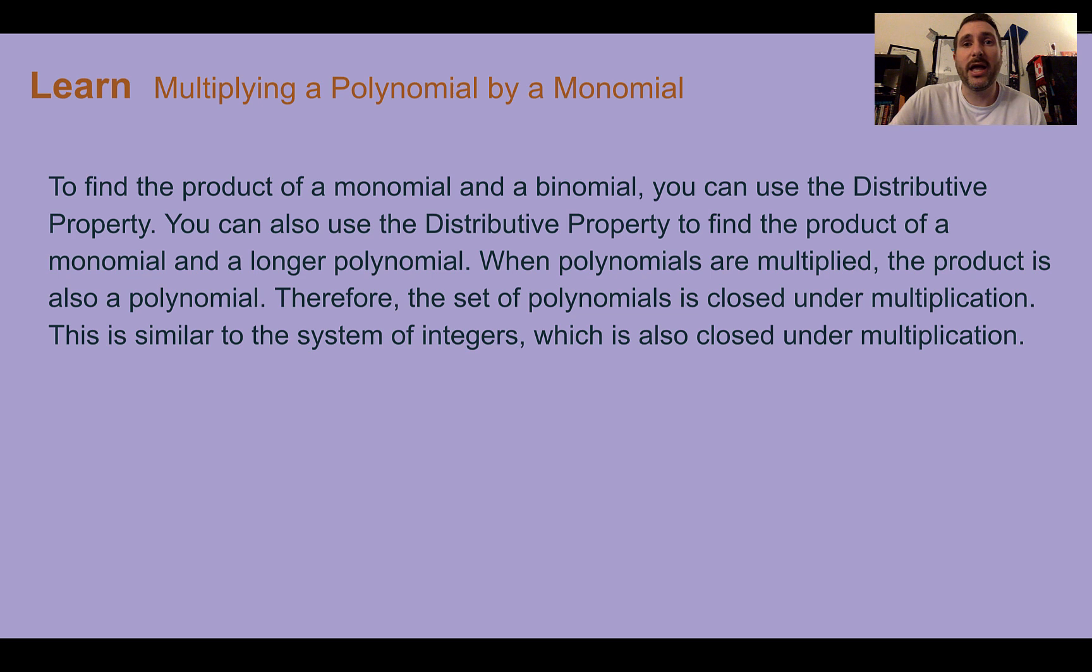Multiplying a polynomial by a monomial. To find the product of a monomial and a binomial, so remember that's two terms, you can use the distributive property. In fact, you can use the distributive property to multiply a monomial and longer polynomials as well. Just like adding and subtracting, when we multiply a monomial with a polynomial, their product is going to be a polynomial as well. Just like when we were adding and subtracting, the variables are going to stay the same, only the exponents really are going to change here.